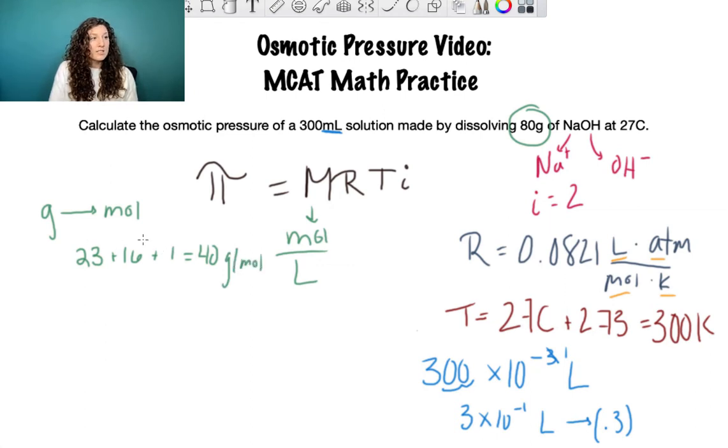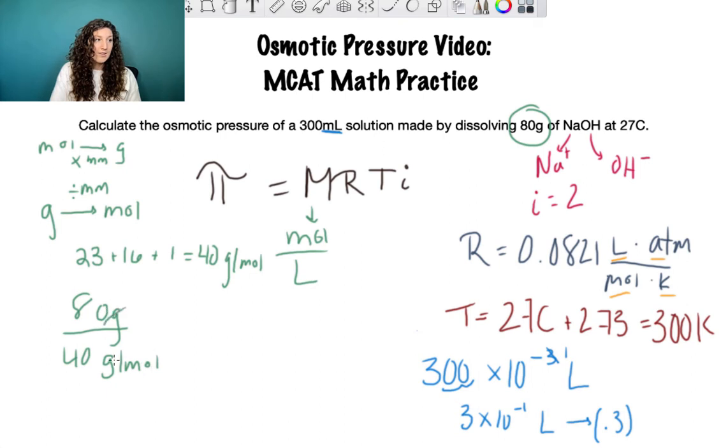Now we need to go from grams to moles using this number. You could set up dimensional analysis like you learned in gen chem. I've memorized that if I'm going from grams to moles I divide by the molar mass, and from moles to grams I multiply by molar mass. So we take 80 grams of NaOH divided by 40 grams per mole. The grams cancel out and moles come on top. 80 divided by 40, cross out the zeros, 8 divided by 4 is 2 moles.